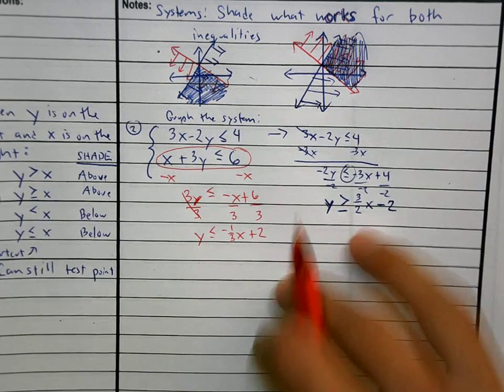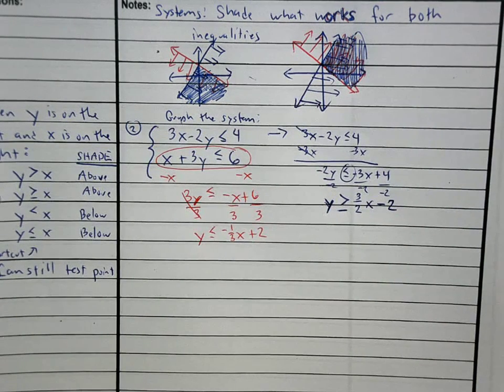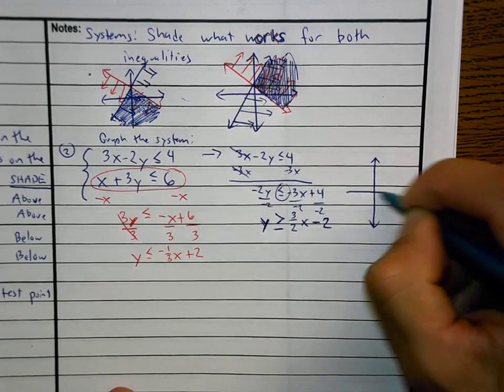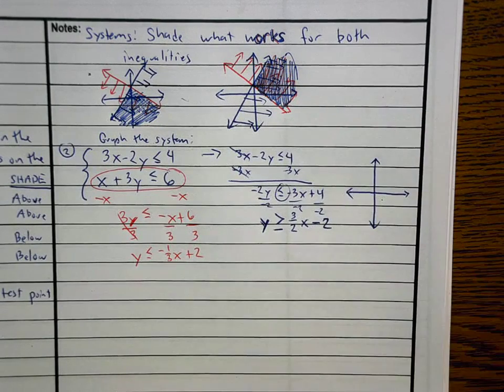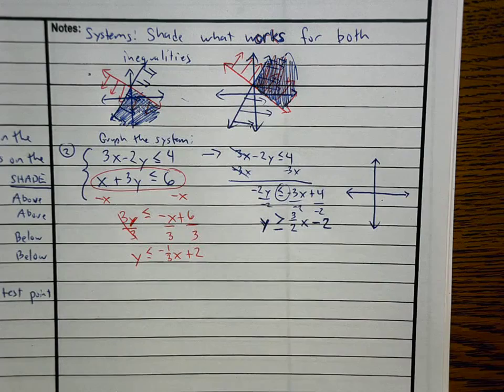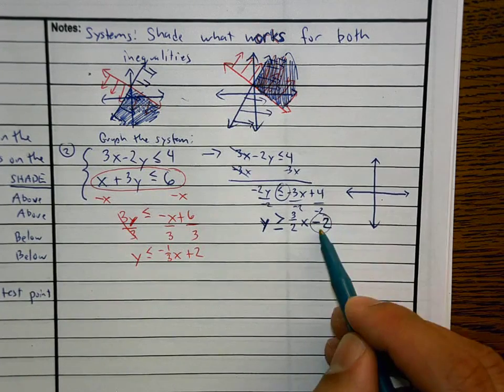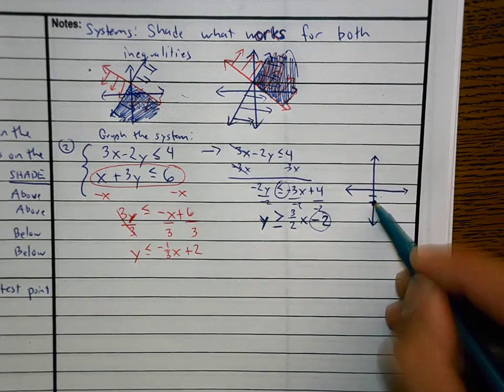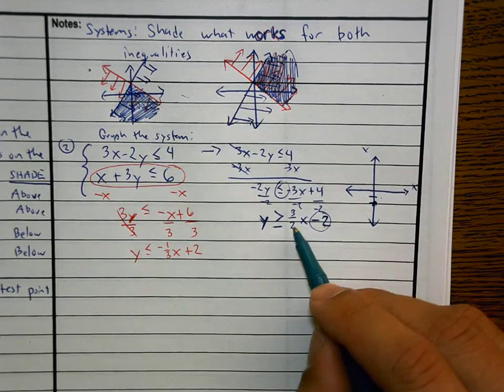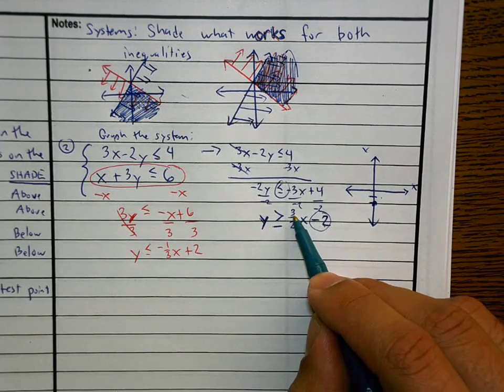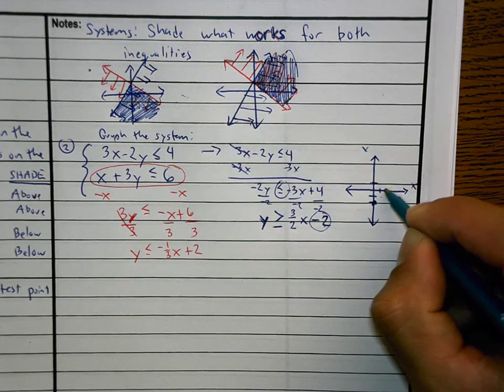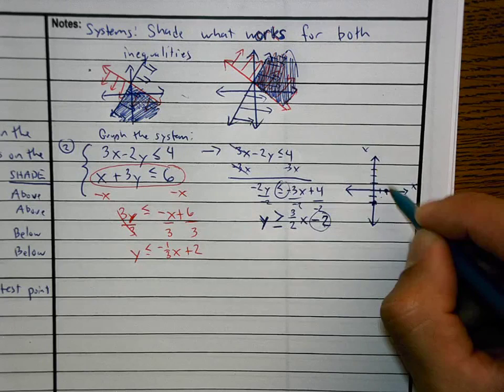Once you get your two equations, now you can go to graph. I have my two equations. I can do exactly what I did before. I start with my B, put my first dot at negative 2. From there I go to my slope. Rise 3, run of 2, up 3 over 2, up 3 over 2.